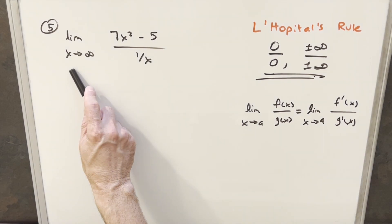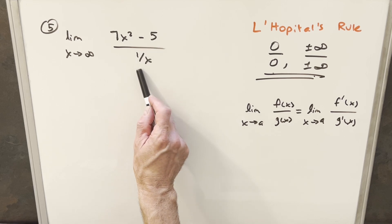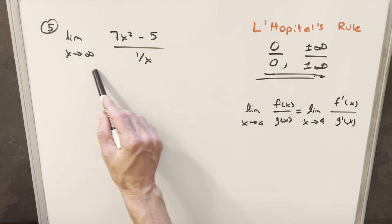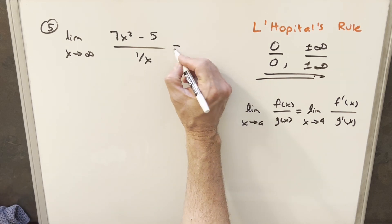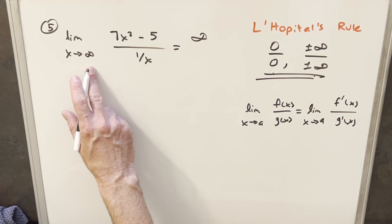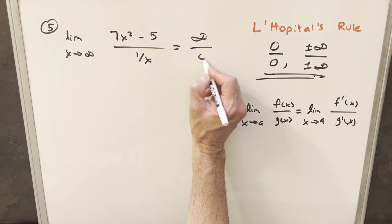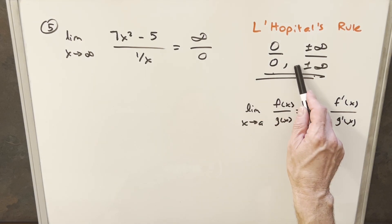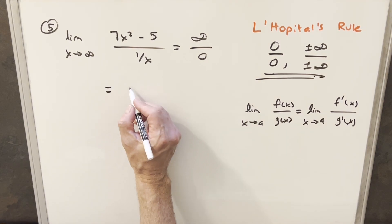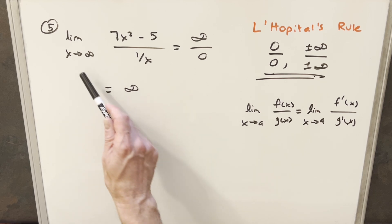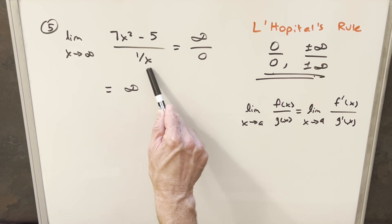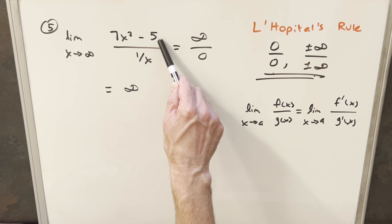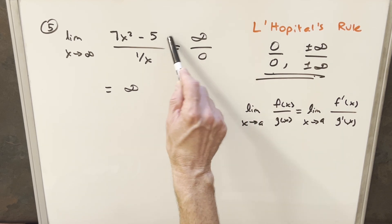Problem 5: the limit as x approaches infinity of 7x minus 5 over 1/x. The numerator goes to infinity. In the denominator, 1 over infinity goes to 0. So we have infinity over 0 — this is not an indeterminate form. Remember this is a limit, so the denominator is technically approaching 0, not actually 0. Think of it as a really small number in the denominator, which makes the whole thing even larger. So this limit goes to infinity.